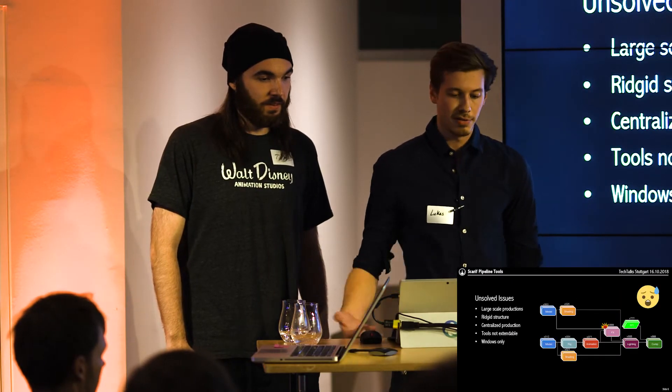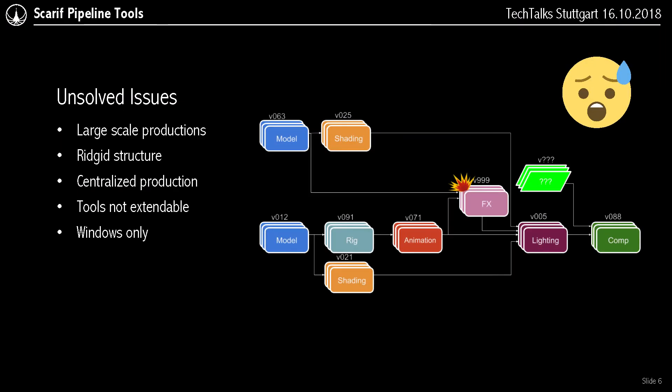For small-scale production it was fine, but there were still a couple of unsolved issues. For example, in large-scale productions, if you render a shot it was not easy to figure out which assets, from which version, in which state were actually used, especially with all the dependencies. The structure was quite rigid — we provided an exact template of how the project needs to be structured and the user could not really redefine it. The production was centralized, so all assets and pipeline scripts were on one server space, meaning any modifications to the pipeline were live — quite risky. The tools themselves were not really extendable because it was just a three-week prototype, and it was Windows only.